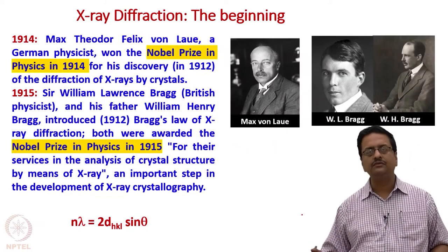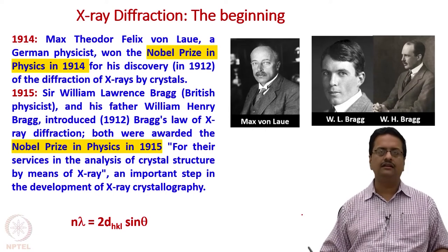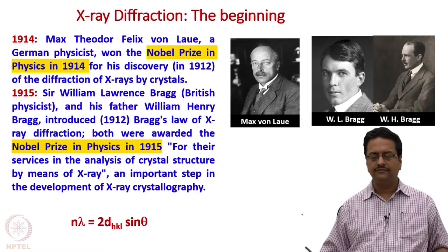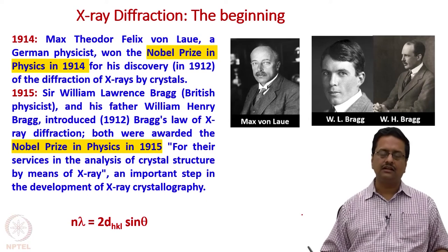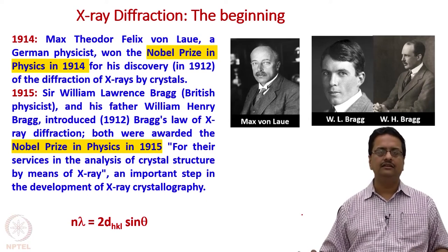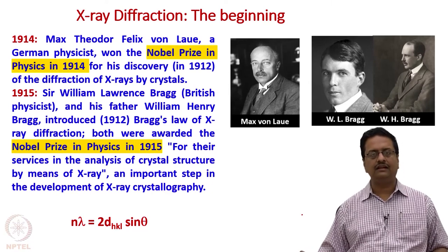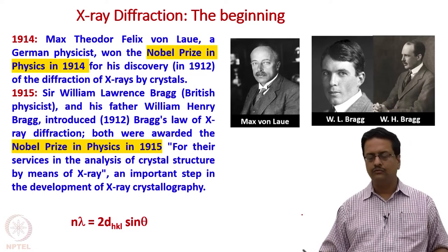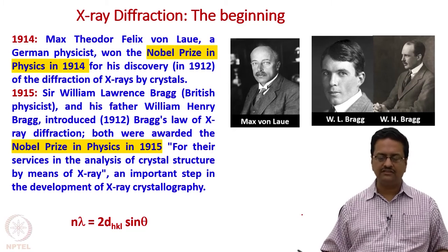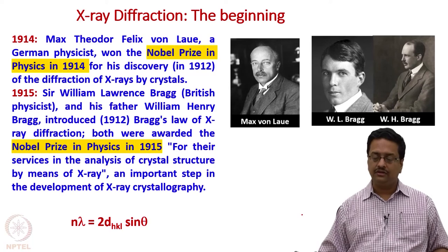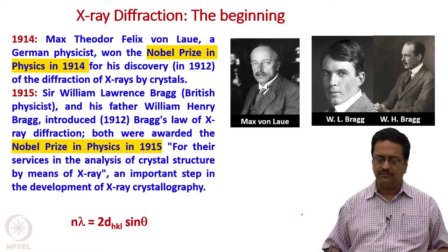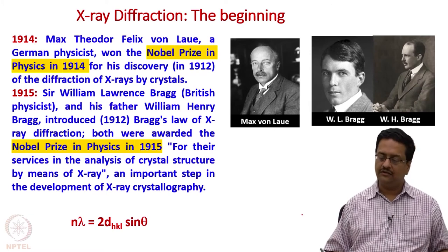Let us look at the beginning of X-ray diffraction, which is now about 104–105 years old. In 1914, Max von Laue first received the Nobel Prize in Physics for the discovery that X-rays are diffracted by crystalline materials — he was the first to show X-rays can be used to characterize crystalline materials. Following his discovery, William Lawrence Bragg, a British physicist, and his father William Henry Bragg introduced Bragg's law of X-ray diffraction and both were simultaneously awarded the Nobel Prize in Physics in 1915 for their services in the analysis of crystal structure by means of X-rays.